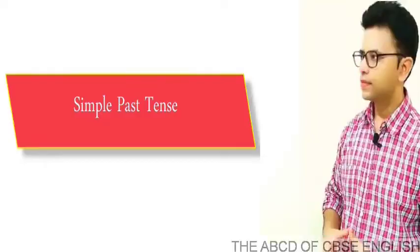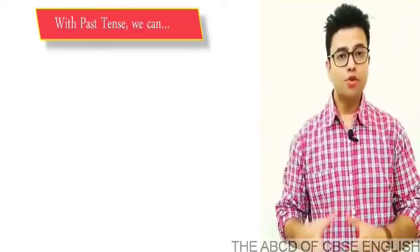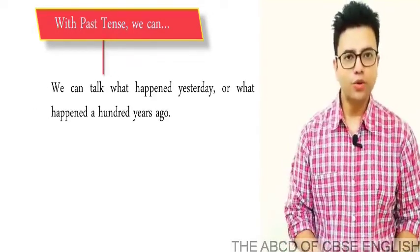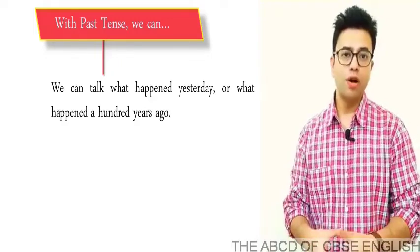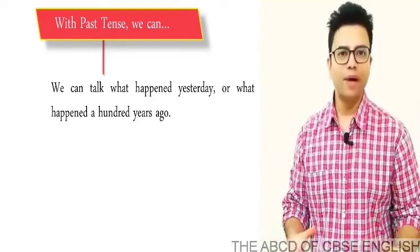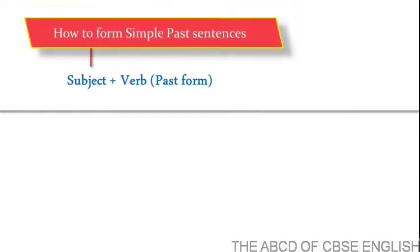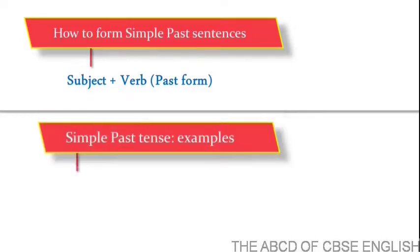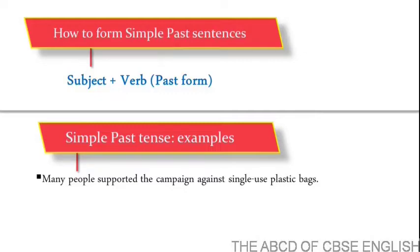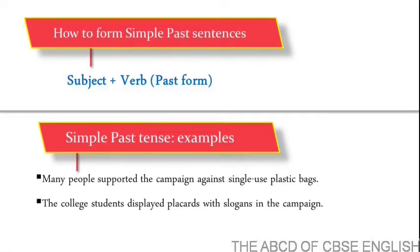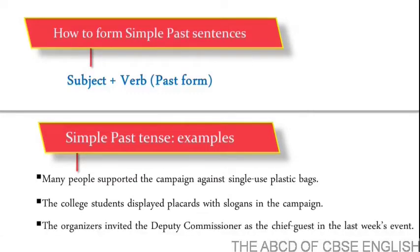Let's talk about past tense. We use the past tense to talk about what happened yesterday or what happened 100 years ago — in other words, an action that started in the past and ended in the past. To form simple past sentences, we put a subject and then the verb in the past form. For example: 'Many people supported the campaign against single-use plastic bags.' 'The college students displayed placards with slogans in the campaign.' 'The organizers invited the deputy commissioner as a chief guest in last week's event.'